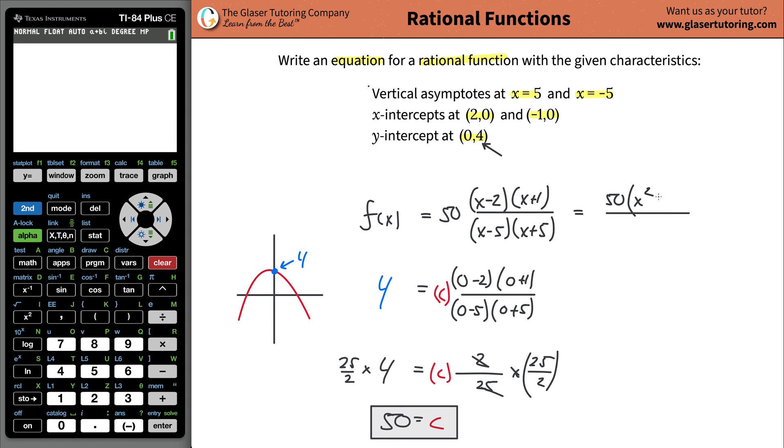So I have 50. Then you got to foil this. X times X is going to be X squared. X times 1 is X. Then this negative 2 times X is going to be negative 2X. When you combine those, that becomes negative X. And then you got the negative 2 and the 1, which becomes negative 2. And then the denominator here, this is a perfect square, right? So that's easy. That's going to be X squared. Then the X times the 5 is 5X. Then this is negative 5X, so that cancels. And then that's going to be negative 25. So this is basically then the answer.